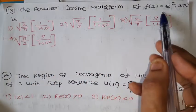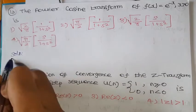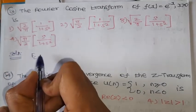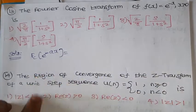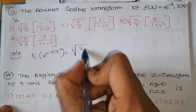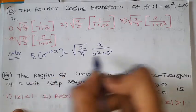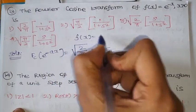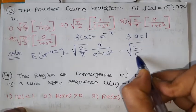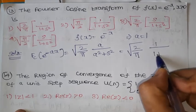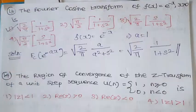Problem number 13: The Fourier cosine transform of f(x) = e^(-x), x > 0. The Fourier cosine transform of e^(-ax) is √(2/π) · a/(a²+s²). For the given function f(x) = e^(-x), a = 1. Substituting: √(2/π) · 1/(1+s²). Option 1 is the correct answer for this problem.